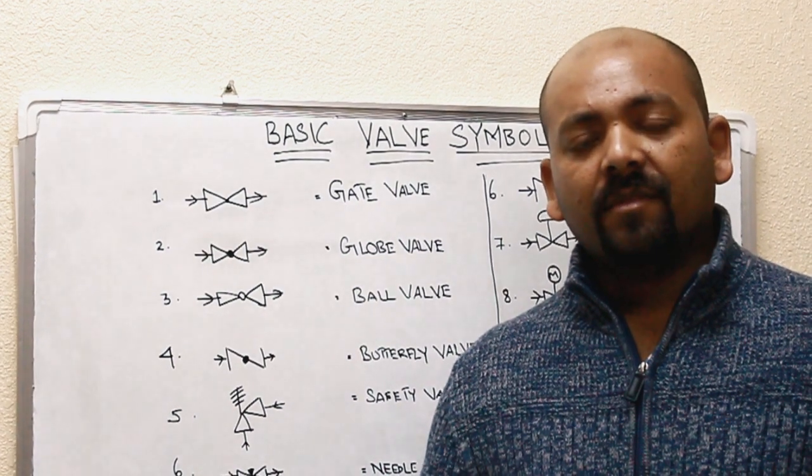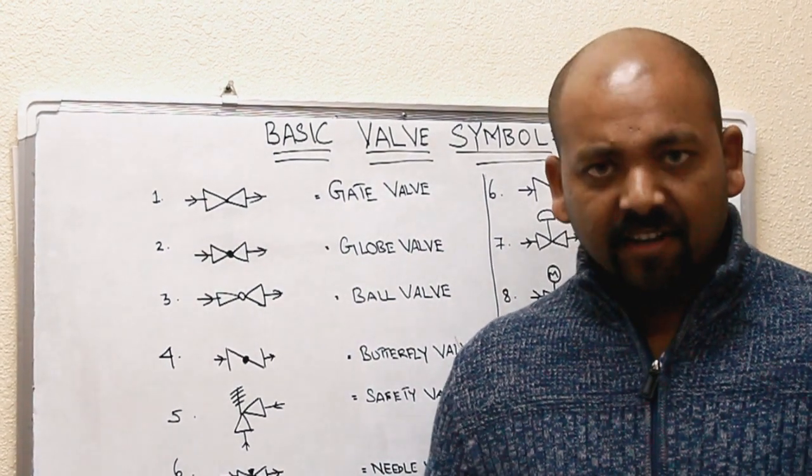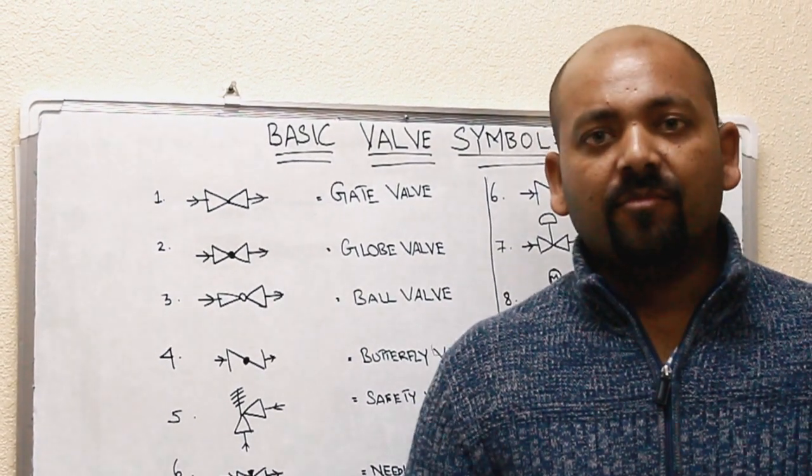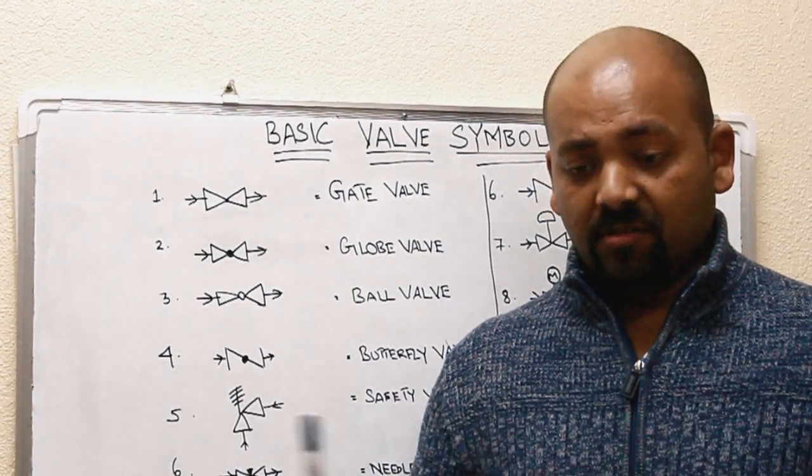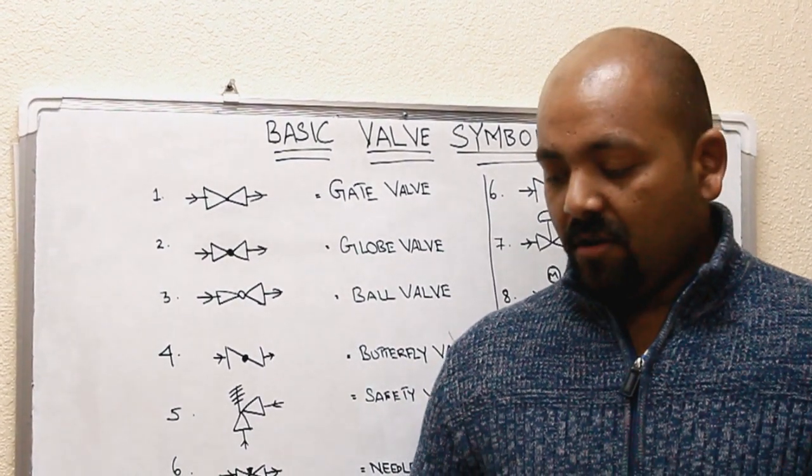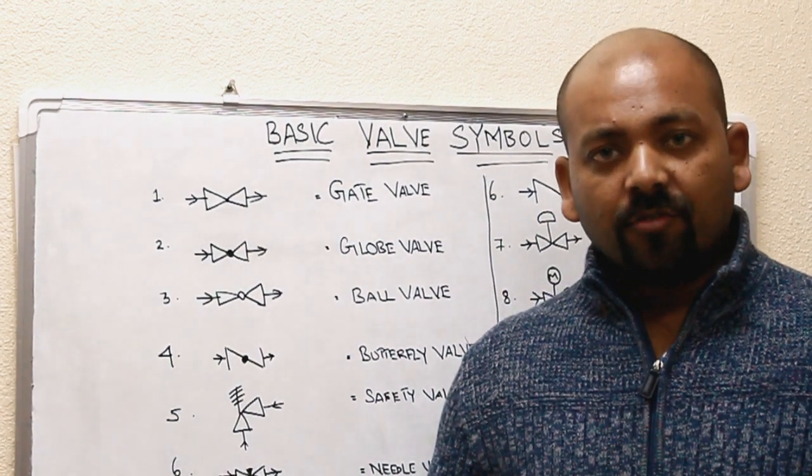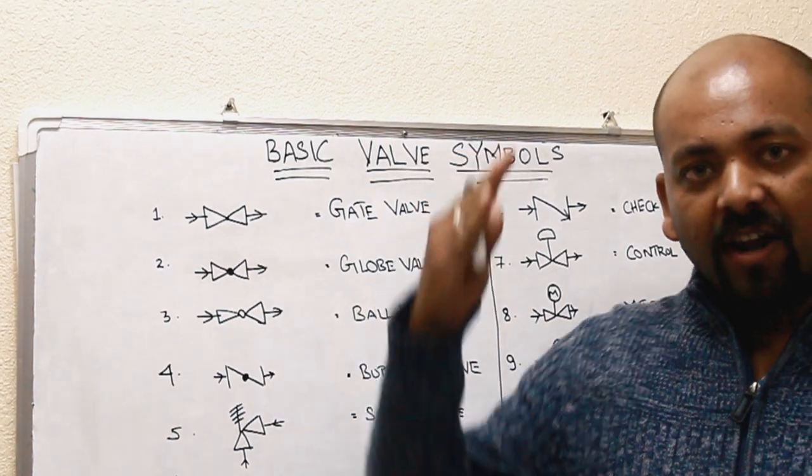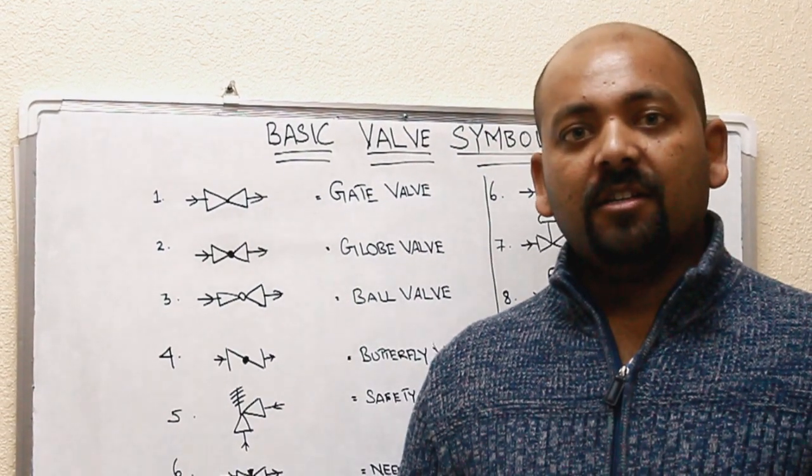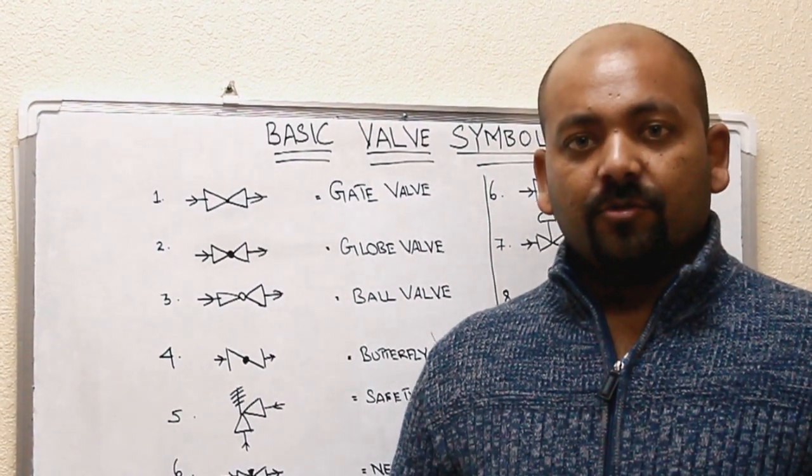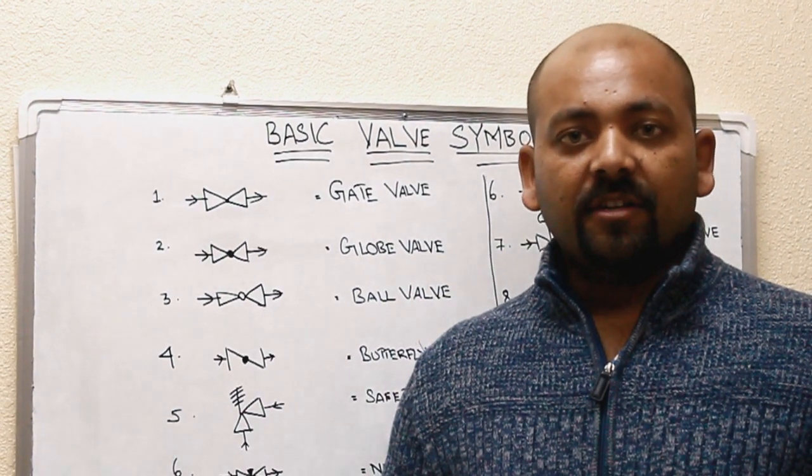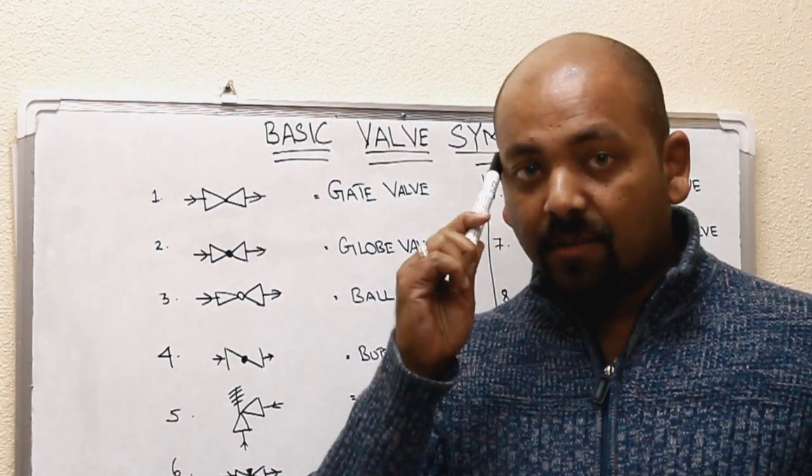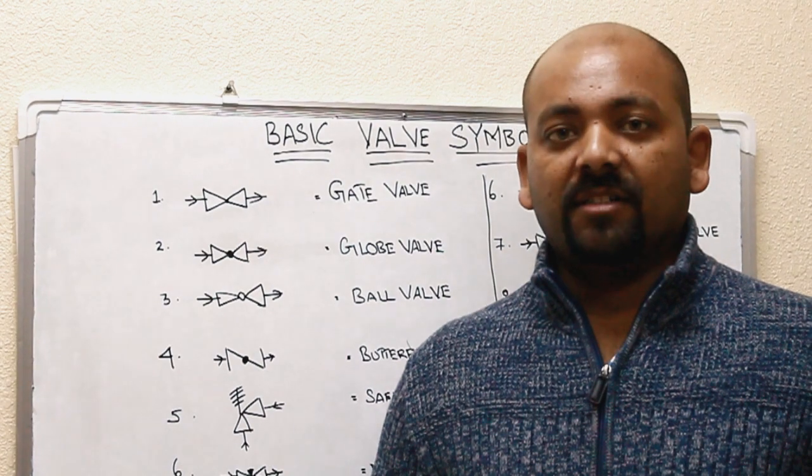The valve is connected in the pipeline, used to direct the flow or the stream of any medium like fluid, liquid, or some kind of gas. This valve is used not only for directing the stream, it can be used for isolation and to regulate the pressure. So it is very important in the P&ID drawings to understand the basic valve symbols.